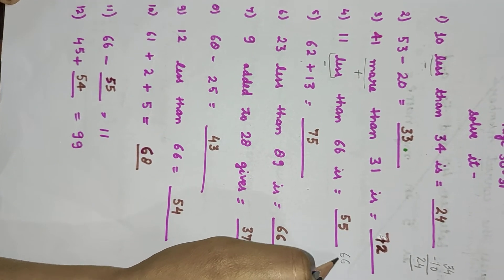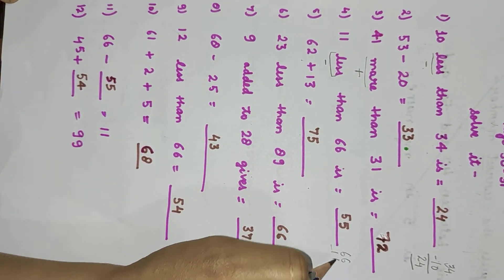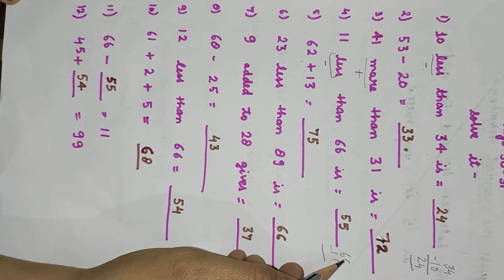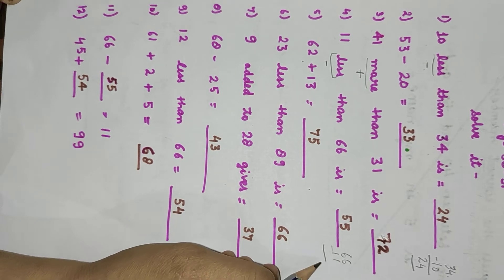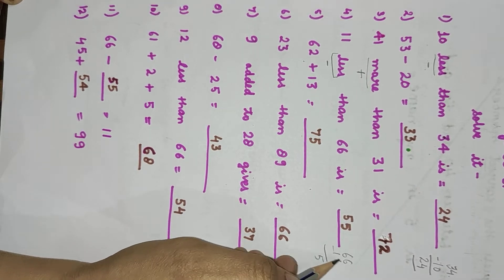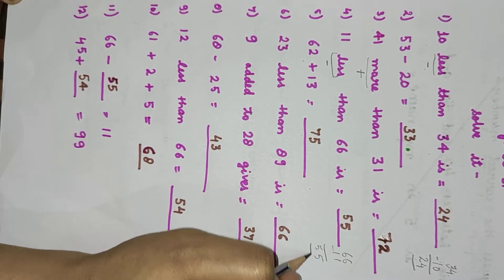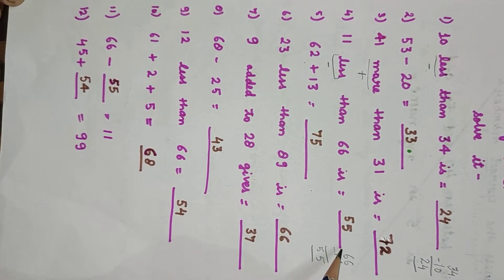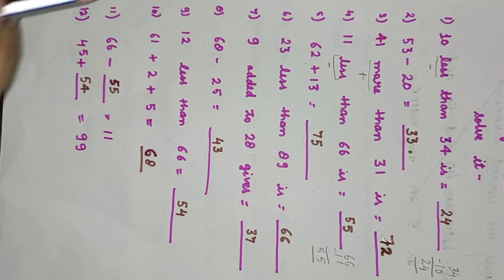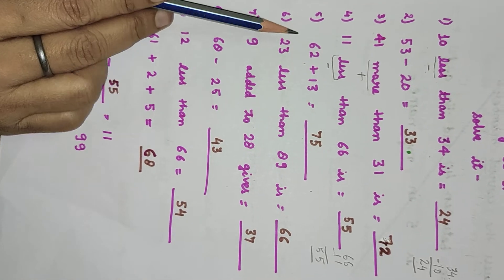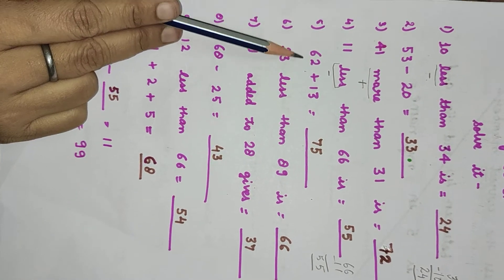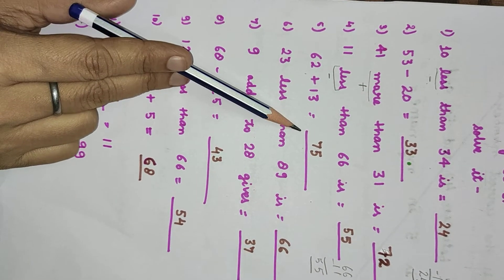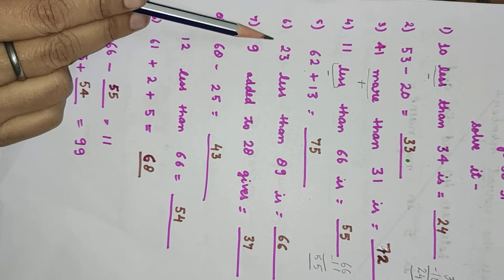11 less than 66 — we do 66 minus 11. 6 minus 1 is 5 and 6 minus 1 is 5. It will be 55. Now the 5th question: 62 plus 13 is 75.